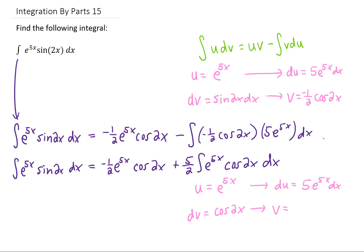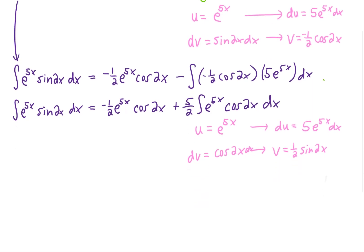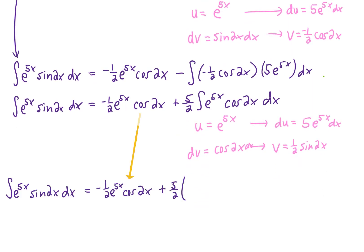Using u as e to the 5x again, and using dv as cosine of 2x dx, we get these results. And now let's rewrite this problem again. Now, we just copied our original integral down in our first term from the first integration by parts. Now, this integral that remains, I'm going to use the integration by parts formula to rewrite. u times v is going to give us subtracting the integral of v du, and let's simplify that last integral just a little bit.